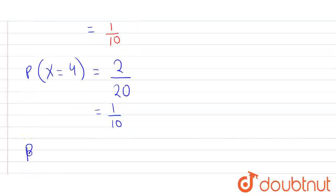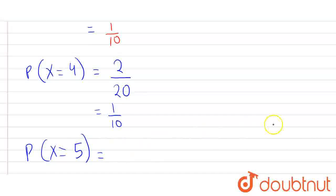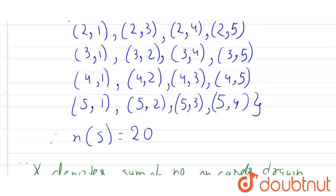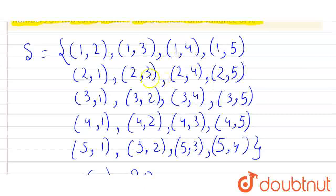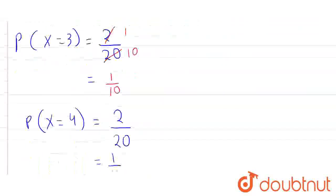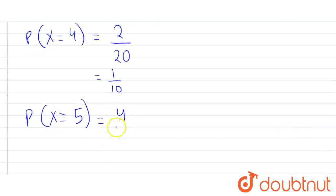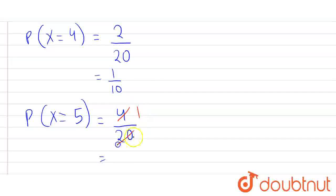Probability that X equals 5: there are 4 cases whose sum is 5. Therefore, P(X=5) = 4/20. Since both 4 and 20 have a common factor of 4, dividing gives us 1/5. Therefore, P(X=5) = 1/5.